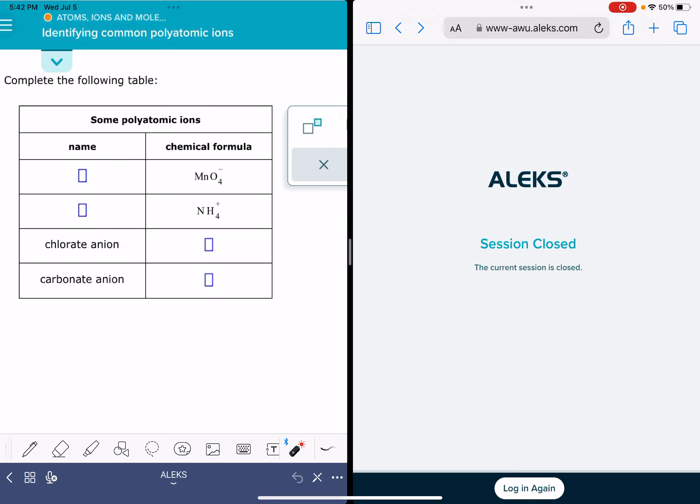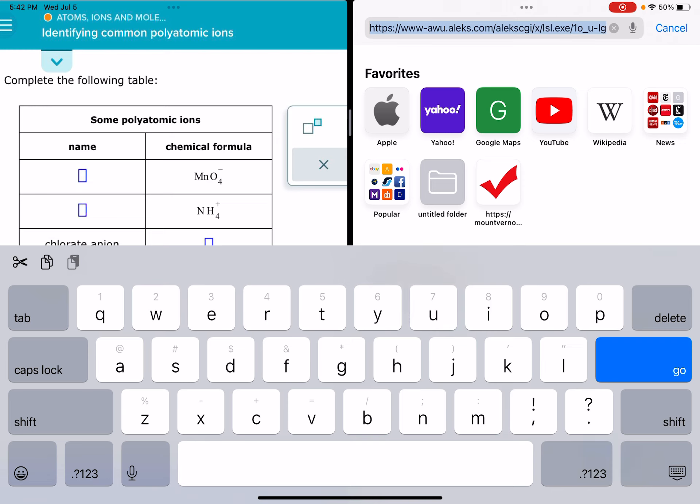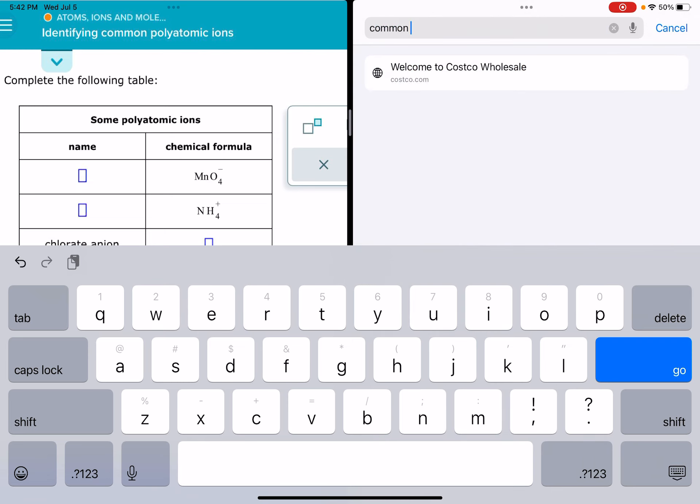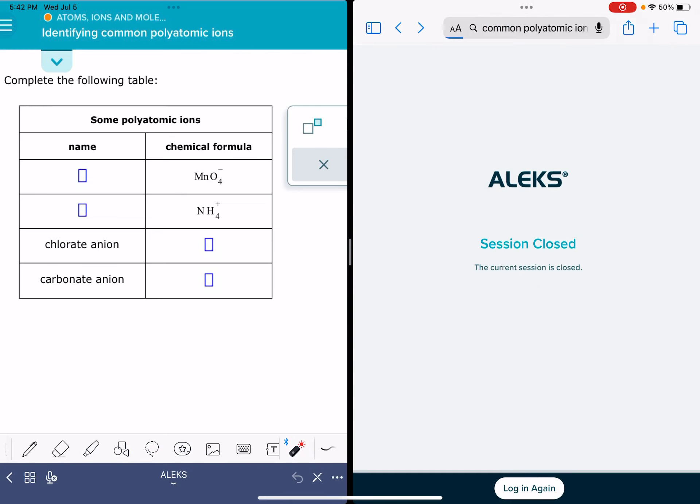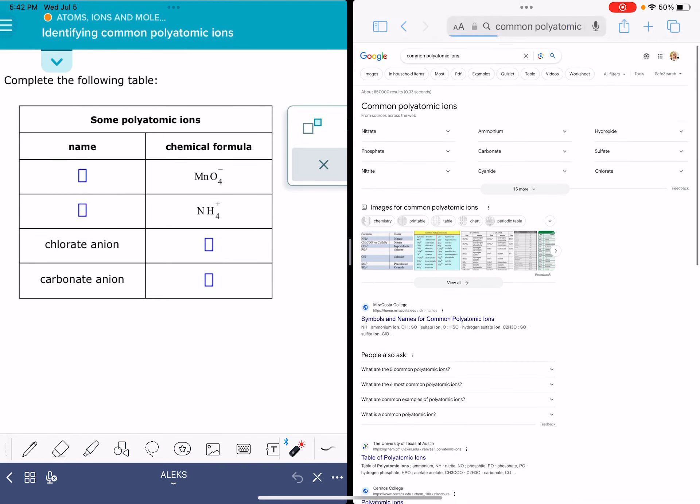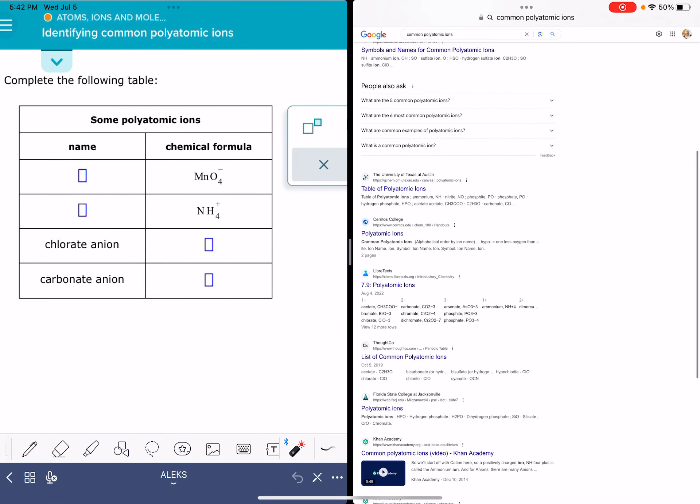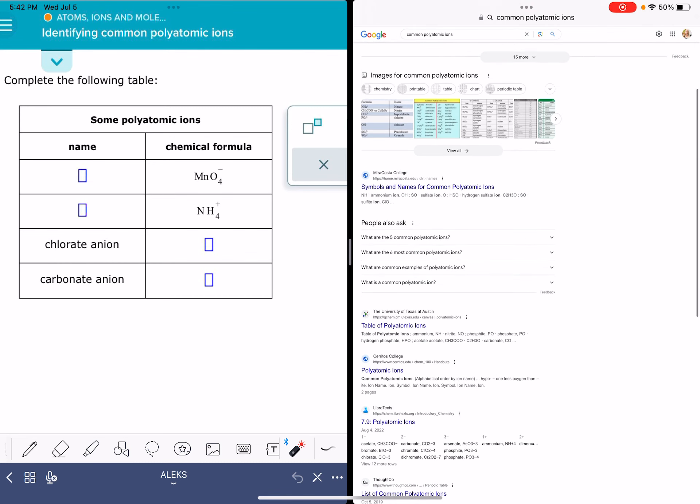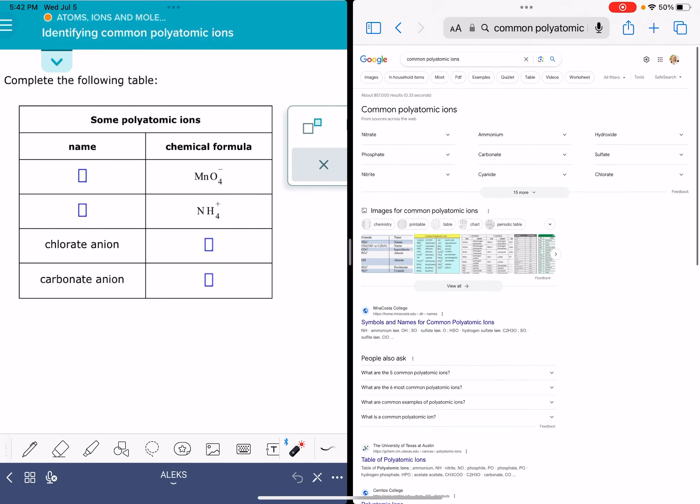I think the easiest way for you to start solving this problem is just to go to the internet and look for a table of common polyatomic ions. They're all over the internet. Common polyatomic ion chart, super handy to have, and there's a ton of them. So you just really need to find one that is in a format that is the most appealing to you.